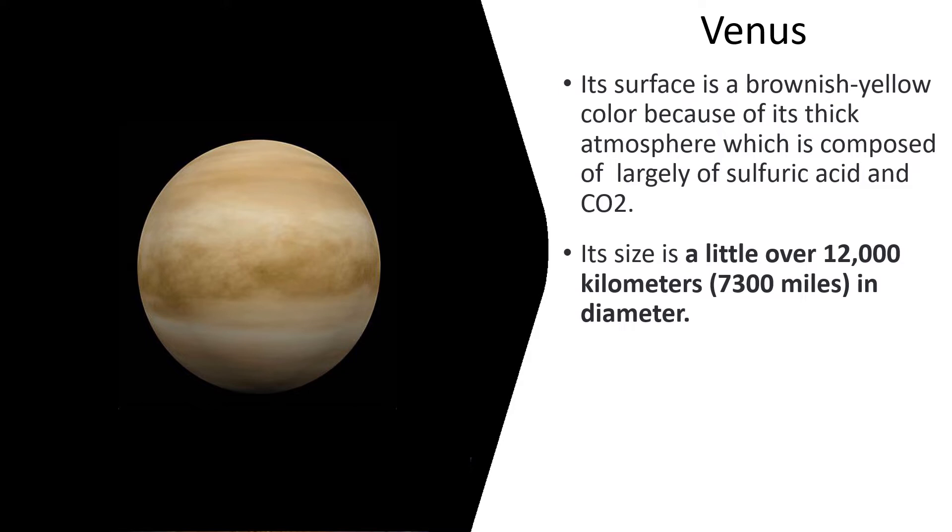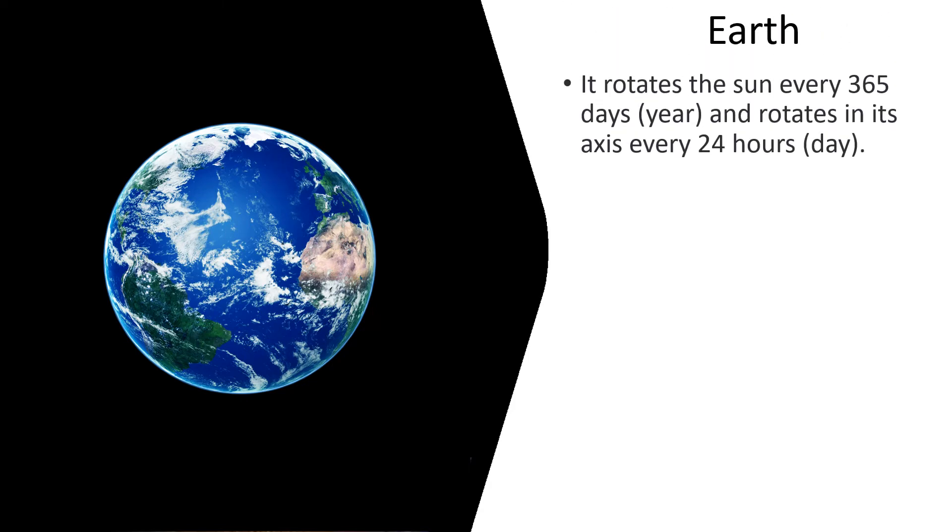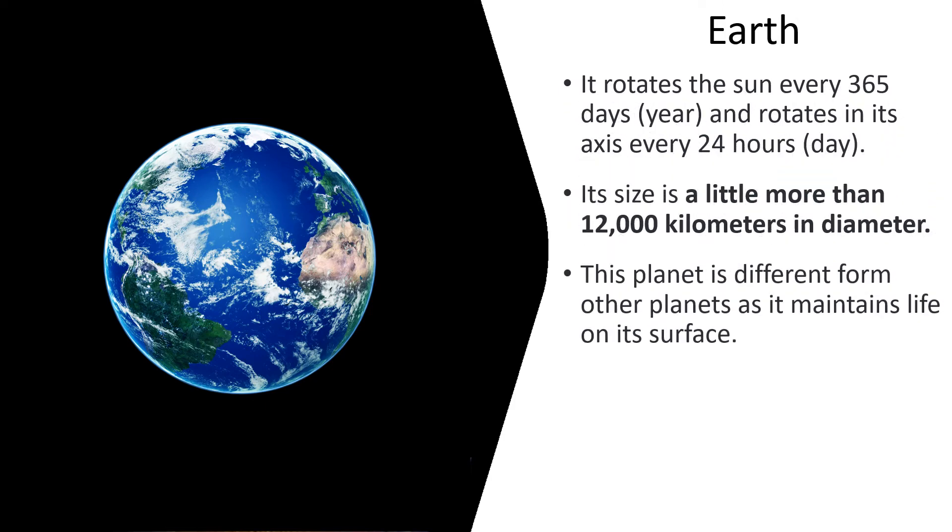Earth. It rotates around the Sun every 365 days, which is one year, and rotates on its axis every 24 hours, which is one day. Its size is a little more than 12,000 kilometers in diameter. This planet is different from other planets as it maintains life on its surface. It has a moon.